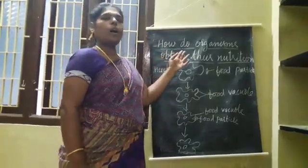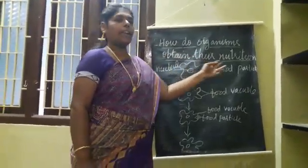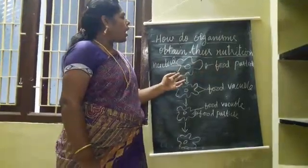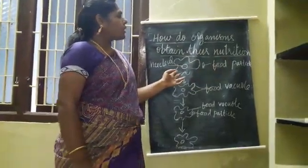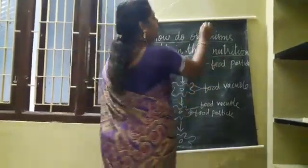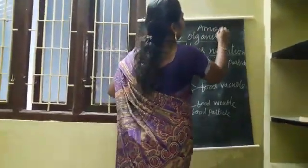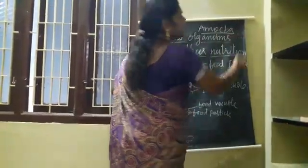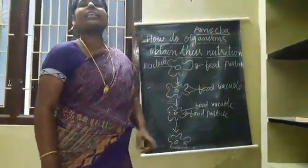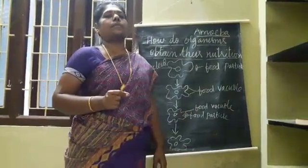How do organisms obtain their nutrition? An example is amoeba. Amoeba is a single-cell organism.